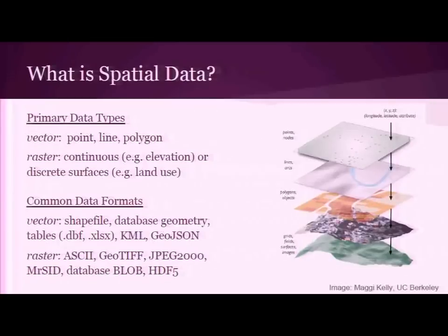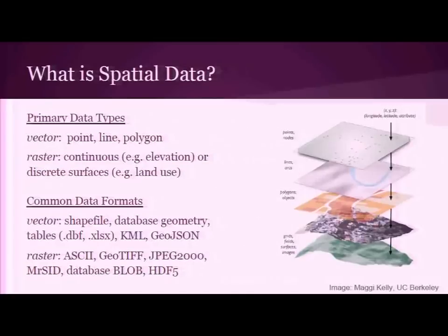Vector data tends to look like things you'd see in a vectorized map like Google Maps — you have points, lines, and polygons representing things. Lines could be roads; polygons could be parcels or houses, but those could also be represented as points depending on what you're trying to do. For raster data, you have two types: continuous rasters representing some kind of surface or gradient — elevation is an example — and discrete rasters for categorical data like land use, where codes represent categories.